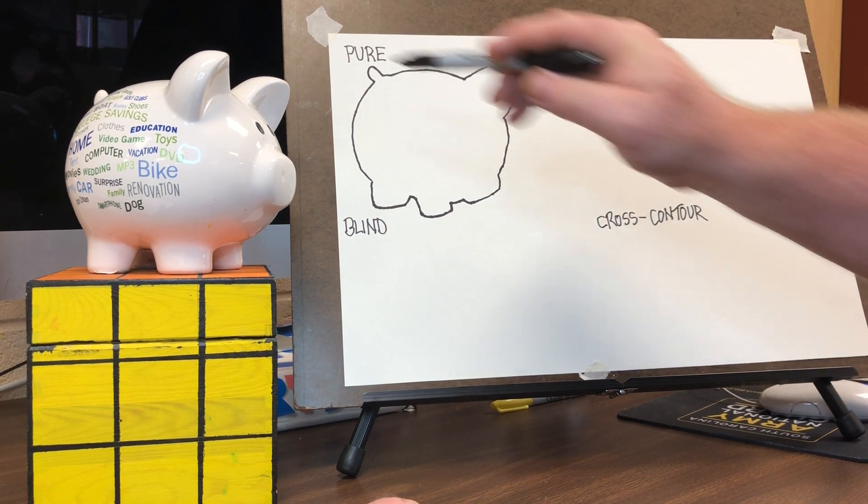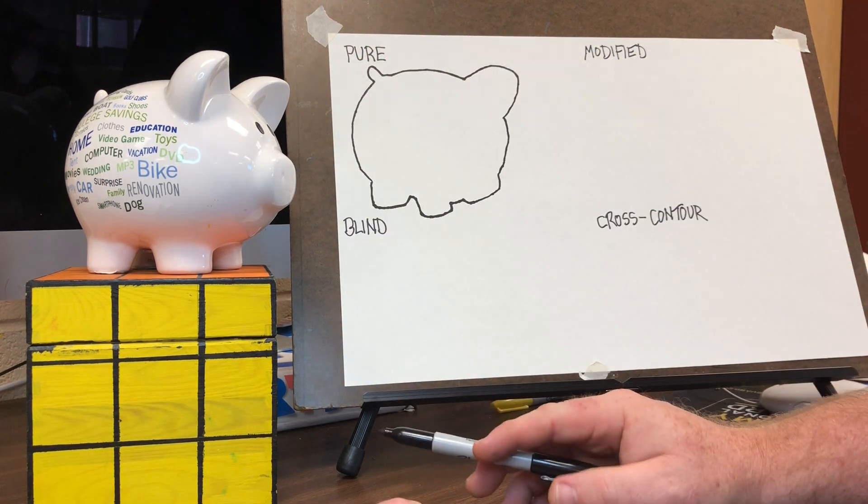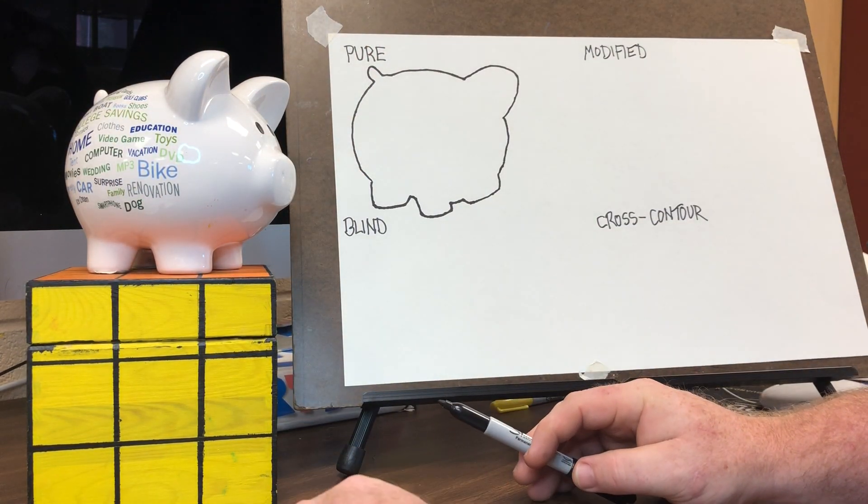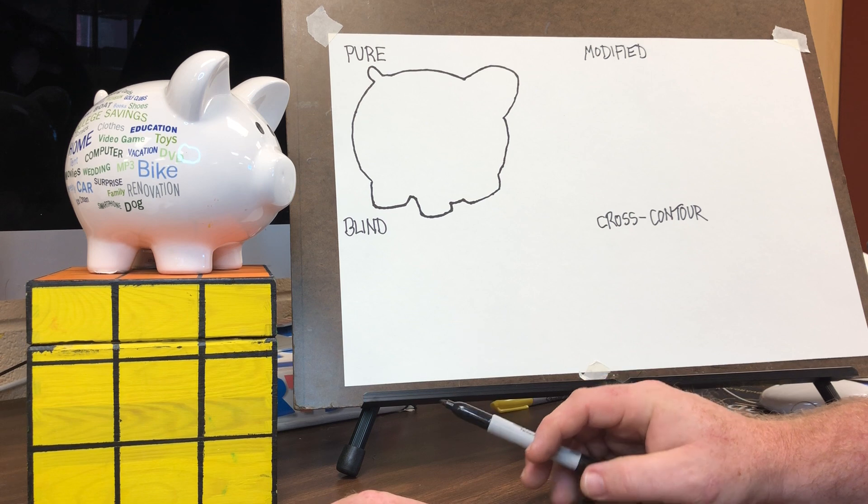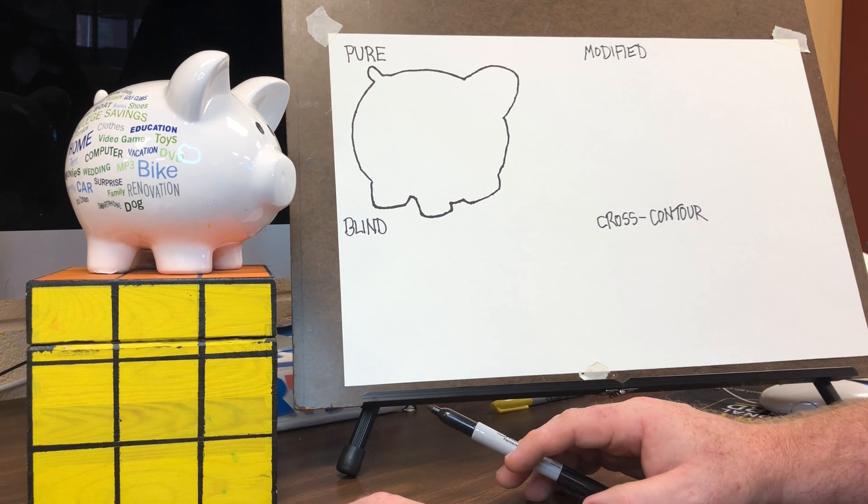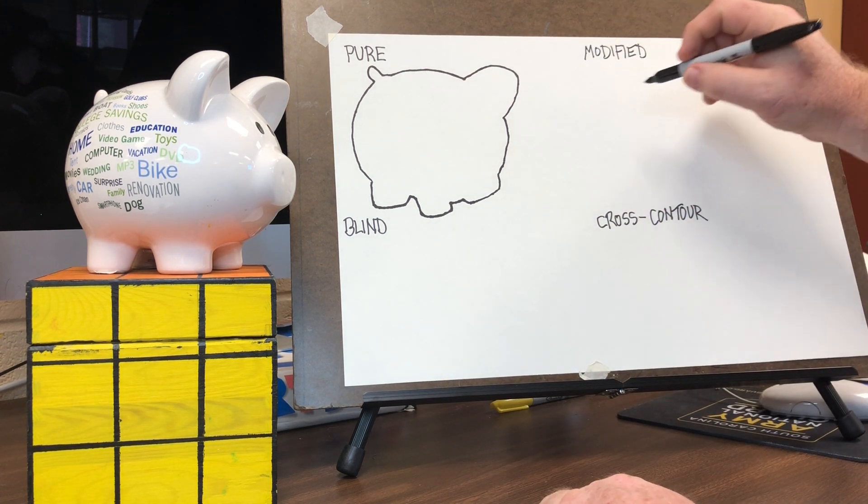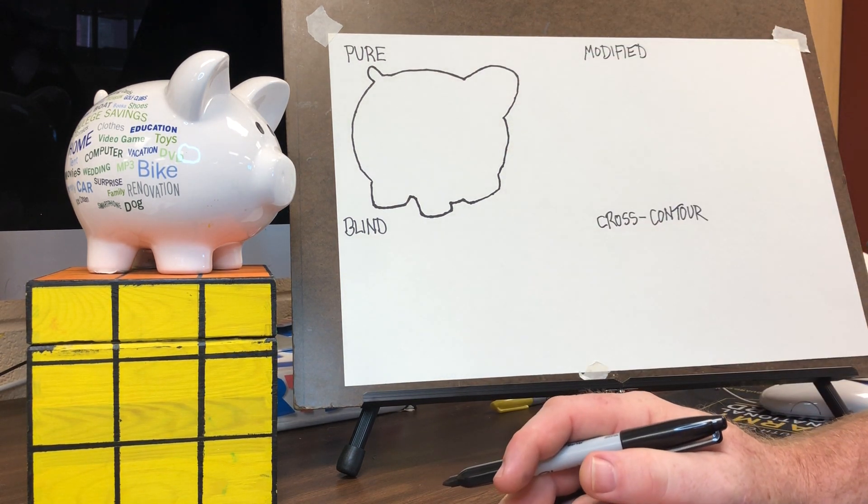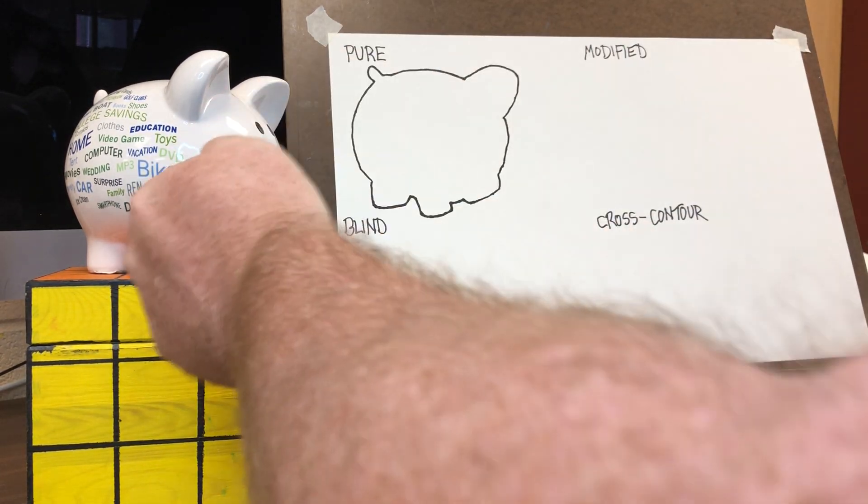Next is modified. Modified contour is not only the outline but also the interior shapes, the major features. If there's some major shadow shapes that you see you can include those. I'm not going to worry about these words on here, I'm just going to deal with the form, the shape of the overall object. For most of you I encourage you just to maybe get an interesting fruit or vegetable out of your refrigerator.